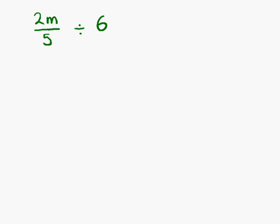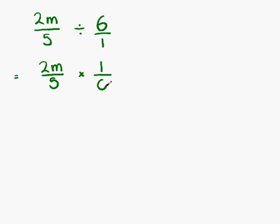Example two. This time we have 2m over five divided by six. So again, what we want to do is make this into a fraction. Dividing isn't easy to do when we have fractions, so we change it to a multiplication. In order to get the same answer, when we multiply, we must turn the second fraction upside down. So we have 2m times one, which gives us 2m on the numerator, and 5 times six, which gives us 30 on the denominator.